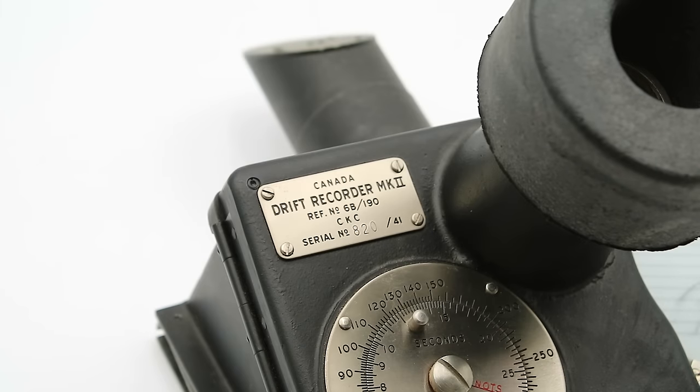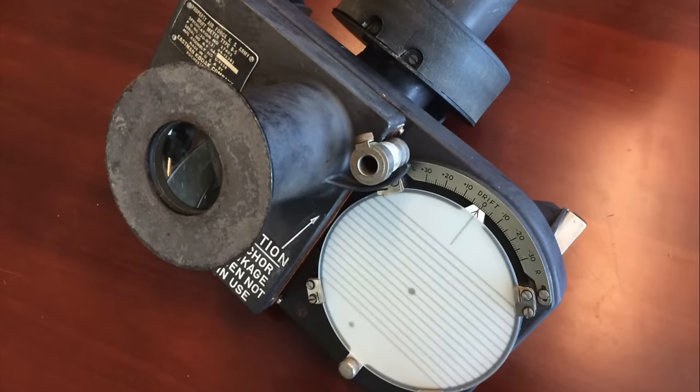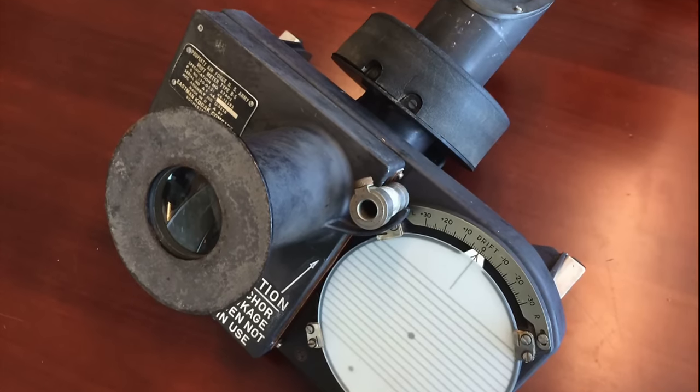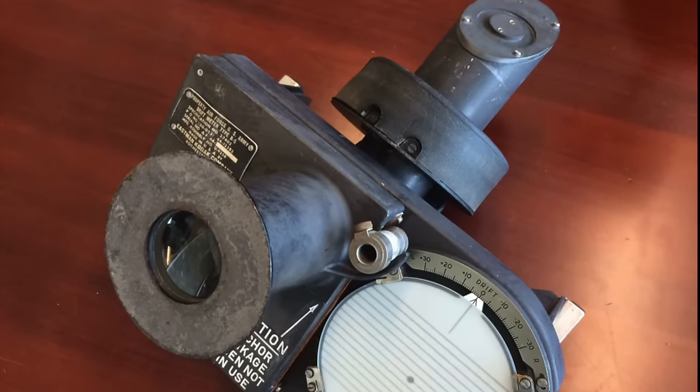Now this particular model was built in Canada for use by the Royal Canadian Air Force but an almost identical drift sight called the B-5 was also used by the U.S. Army Air Force and the U.S. Navy.